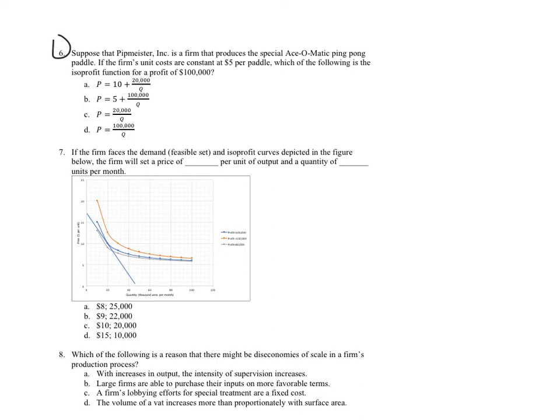If the firm's unit costs are constant at $5 per paddle, which of the following is the isoprofit function for a profit of $100,000? So we need to know what the expression for profits are, and remember from the reading, profits are price minus average total cost or unit costs, here they're constant at $5 a paddle, times the quantity produced.